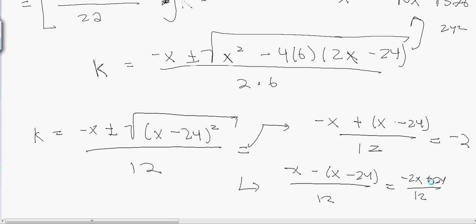So if you simplify that, you will get (-x + 12) / 6. So the values of k that make the equation true is 2. And there's two possibilities: k can either be -2 or k could be (-x + 12) / 6. That will get you full credit on the test if you come across the question.